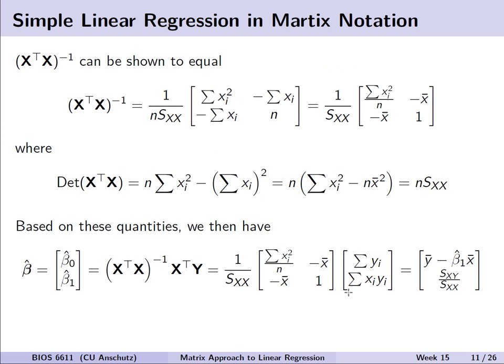We then need to solve for X-transpose X inverse, which also has recognizable components. Calculating that inverse, we end up with something like 1 over the sums of squares for our single predictor X. In the 1,1 position we have the sum of xi squared divided by sample size. On the off-diagonal we have the negative mean of predictor X, and in the bottom right a value of 1.